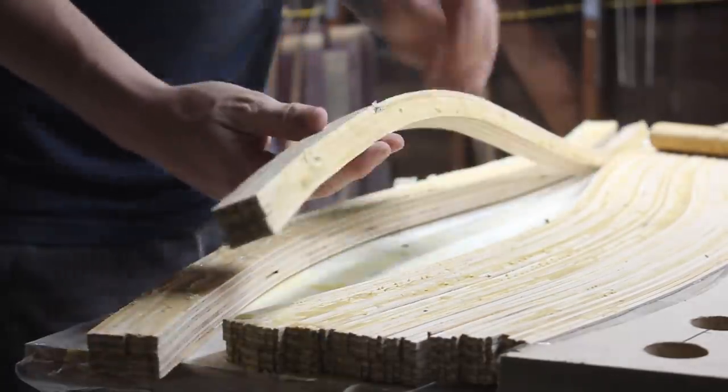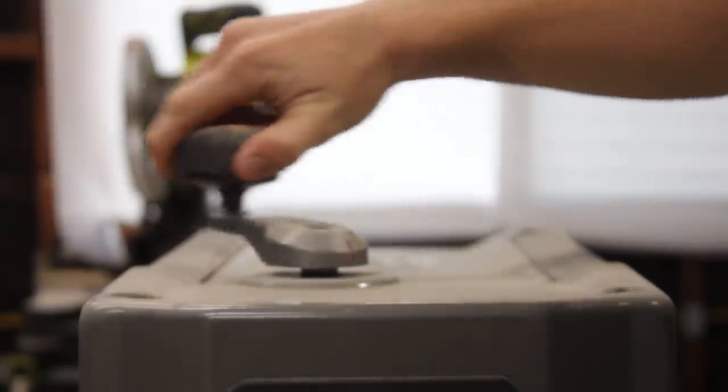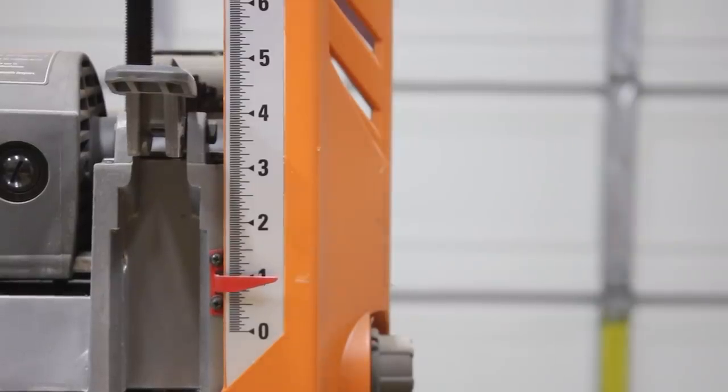To clean things up, I used my planer. Now the goal wasn't to take off actual thickness of the strips. It was really just to remove excess glue and make sure all of the strips were the exact same height.